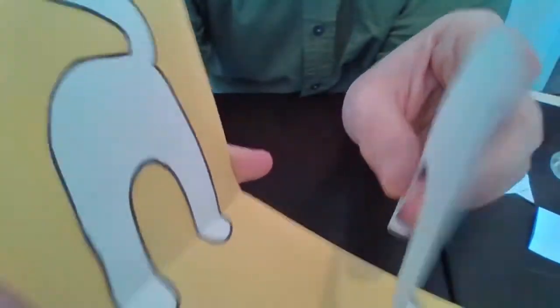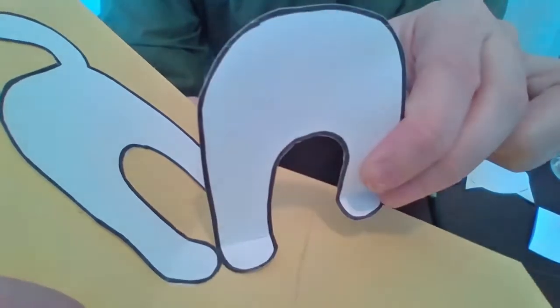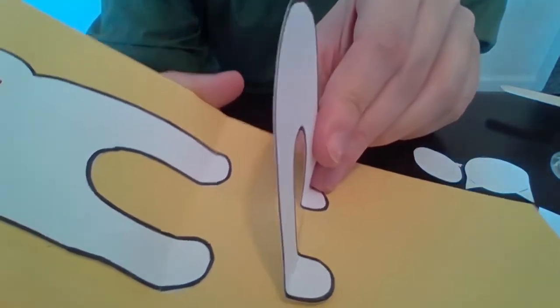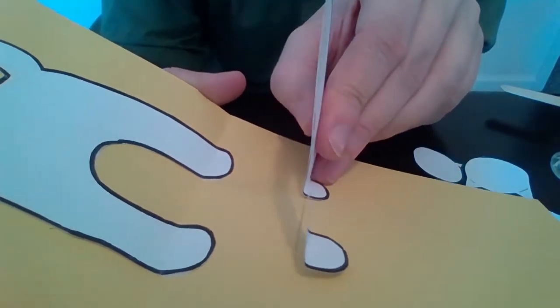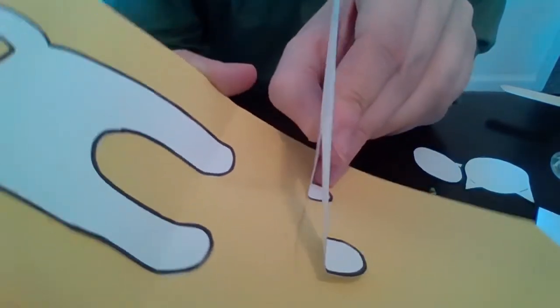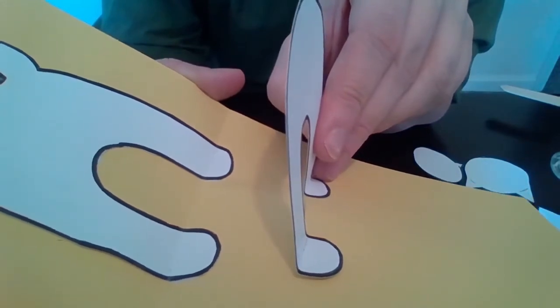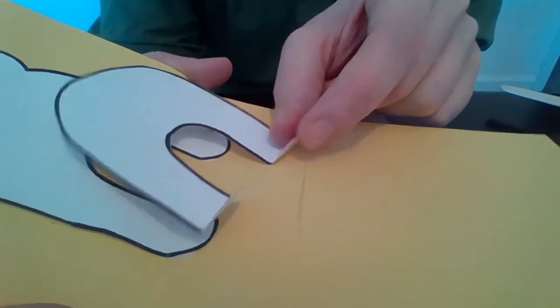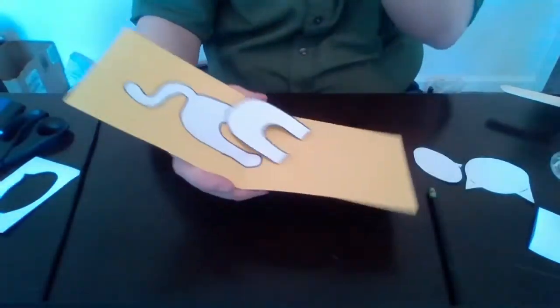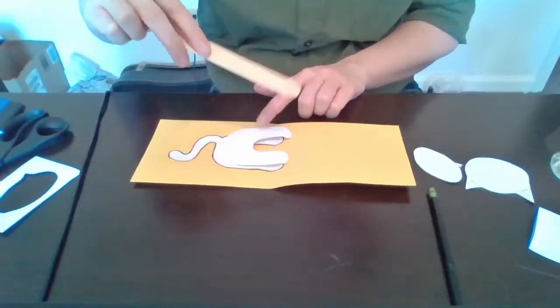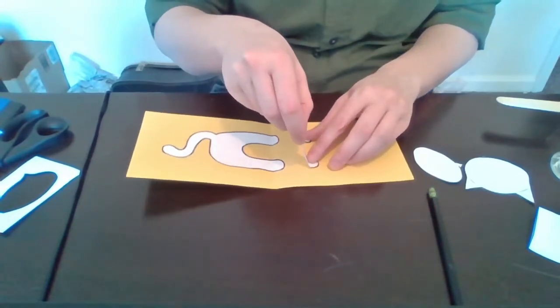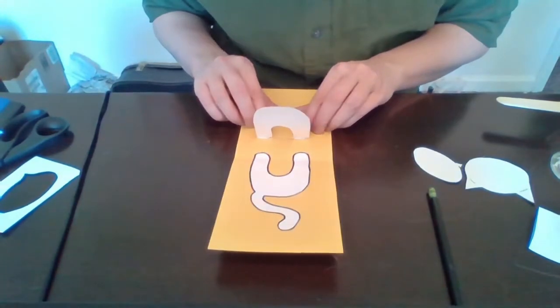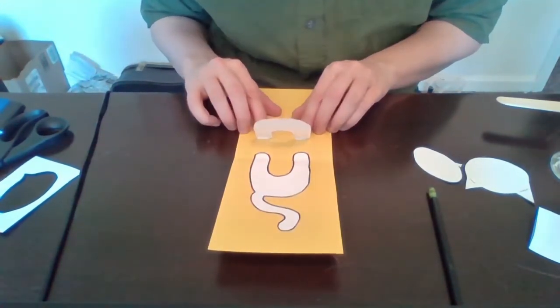So it'll look like this. Front body piece is going to go right here on the line so that the crease of the feet line up with the line that I drew. Okay, we're going to glue the feet down here. Make sure you line it up with your back body piece.